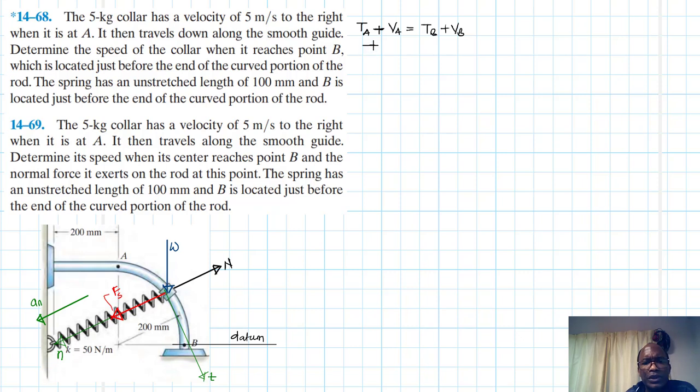T itself is kinetic energy, and then V is the gravitational potential energy and the elastic potential energy. So let's start from point A.